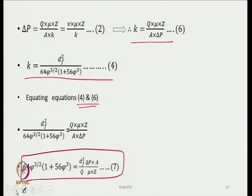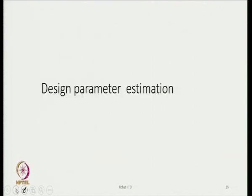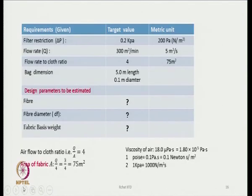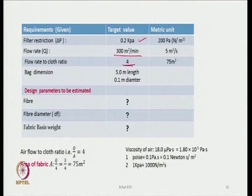Now we are going to estimate design parameters and take an example. The filter restrictions are: pressure drop is 0.2 kPa — that is 200 Pascals — flow rate is 300 meters cube per minute, and flow rate to cross-section ratio is 4. The bag dimensions are 5 meters in length and 0.1 meter in diameter. We have to estimate what fiber diameter we should use and what fabric basis weight it should be.